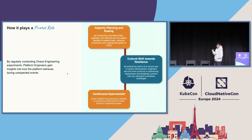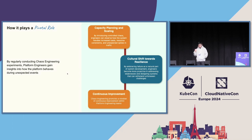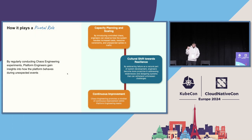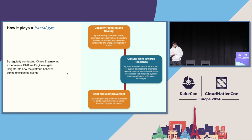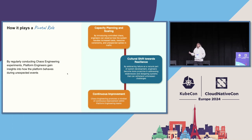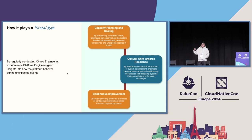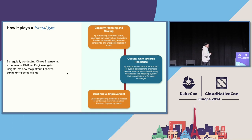Chaos engineering in platform engineering has three main pillars. First, capacity planning and scaling: by introducing controlled chaos, you understand the maximum capacity and at what point to expect failure. Second, embracing resiliency: adopting the chaos-first principle shifts your system toward resiliency naturally, so you embrace failure as part of the system rather than being afraid of an outage. Third, continuous improvement: this promotes a mindset of continuous improvement within your teams rather than scrambling when an outage actually happens.